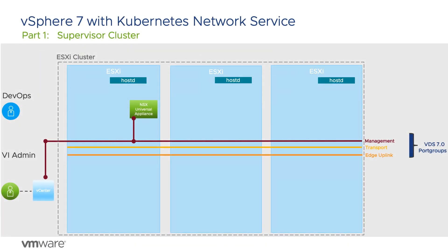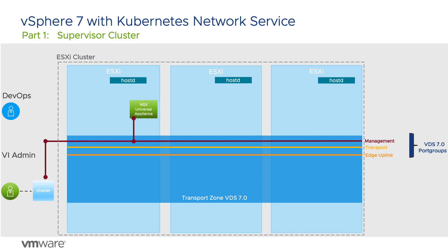Using NSX Manager, ESXi nodes are configured as transport nodes connected through our vSphere distributed switch, and are then added to a transport zone. Edge VMs are deployed onto the management network. They are also connected to the transport network for overlay traffic and the uplink network for traffic outside of the NSX overlay. It is not a requirement to deploy the edges on hosts in the transport zone, but if you do, the transport and uplink networks must be on different VLANs.